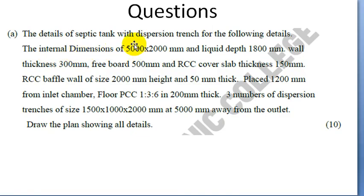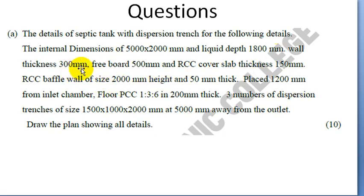Let's look at the details of the safety tank with dispersion range. Internal dimensions: 5000 by 2000 mm. Liquid depth: 1800 mm. Wall thickness: 300 mm. Freeboard: 500 mm. RCC cover slab thickness: 150 mm. RCC baffle wall size: 2000 mm height by 50 mm.